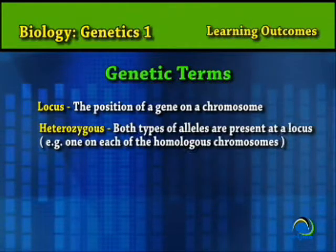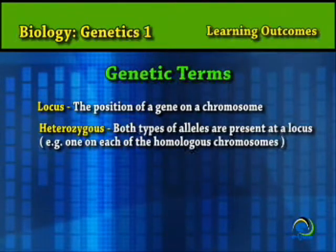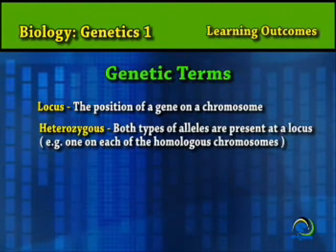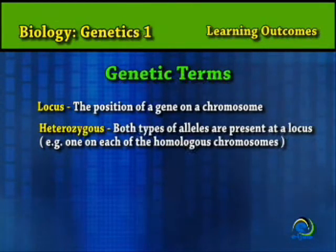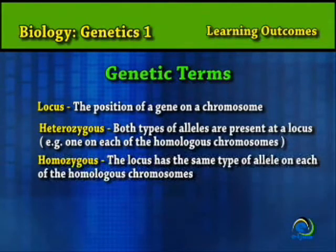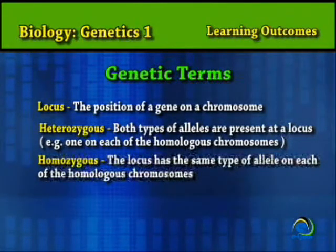Heterozygous — both alleles are present at a locus; for example, one on each of the homologous chromosomes. Homozygous — the locus has the same allele on each of the homologous chromosomes.